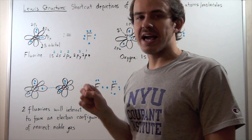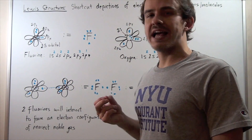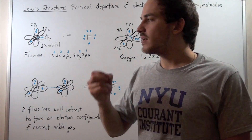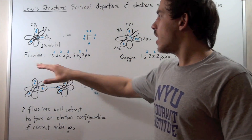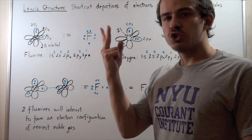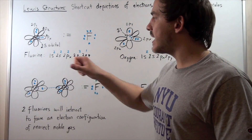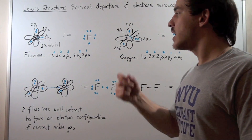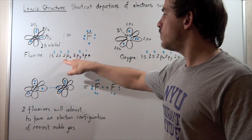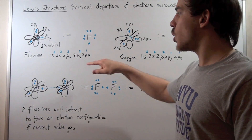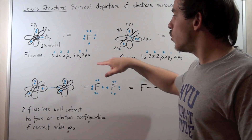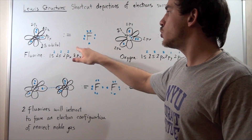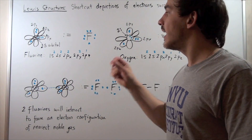Let's suppose we have a fluorine atom. A neutral fluorine atom has nine protons and nine electrons. The electron configuration of our fluorine atom is as follows: two electrons go into the 1s orbital, two into the 2s orbital, two into the 2px, two into the 2py, and one electron into the 2pz, for a total of nine electrons.